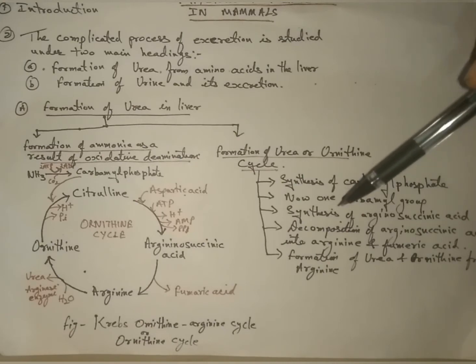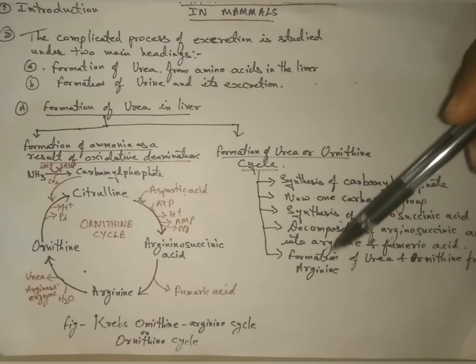After this, glutamic acid is again converted into alpha-ketoglutaric acid and thus ammonia is produced.